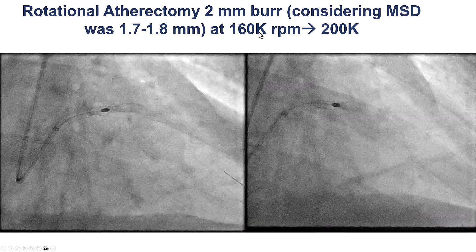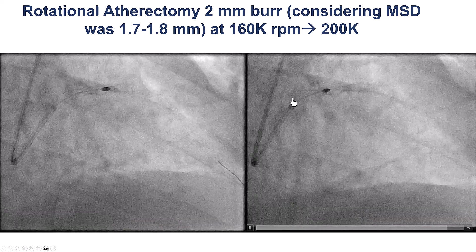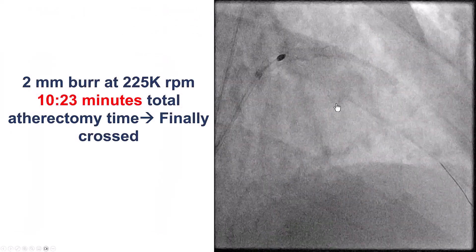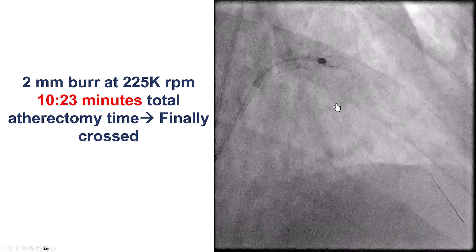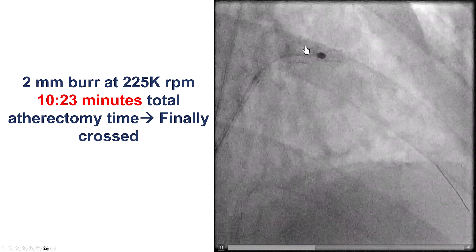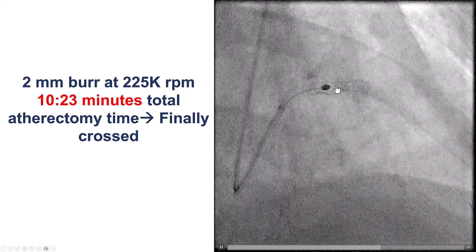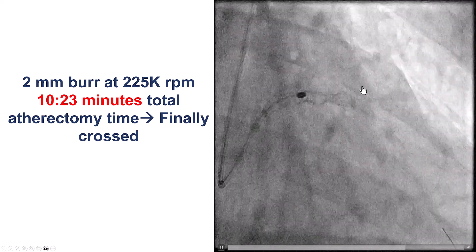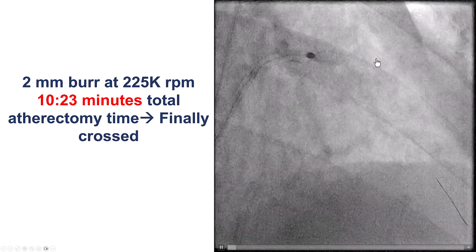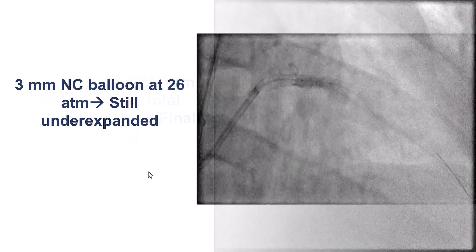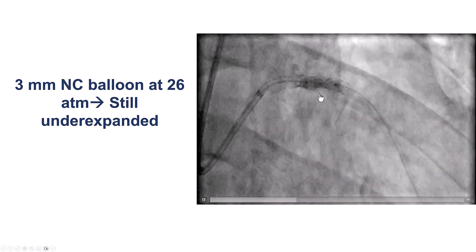We tried at 160,000 rpm — that did not do much. We then increased to 200,000 rpm, making some progress, but the burr would still not go through. We finally increased to 225,000 rpm. The total rotablation time was 10 minutes and 23 seconds; the actual crossing of the burr happened at 9 minutes and 52 seconds. We did runs of approximately 20 to 30 seconds in duration. The patient remained stable throughout with some chest discomfort at the moment the burr went through, but tolerated it well without EKG changes. However, even after this rotablation, the stent was still not fully expanded.